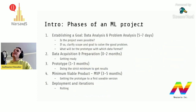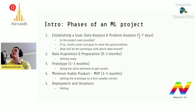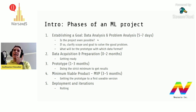A machine learning software project has distinct phases. The first is establishing a goal: data analysis and problem analysis. The most important questions you'll ask yourself arise in this phase — is the project even possible? If so, clarify the scope and the goal to solve the right problem, and define what the prototype will look like and what data format will be required.